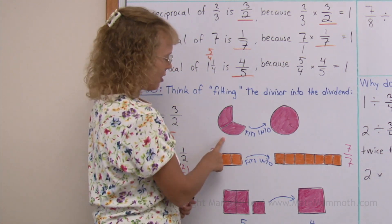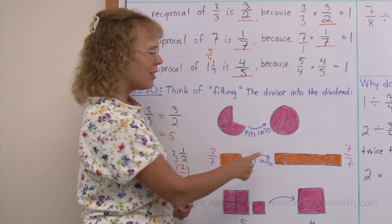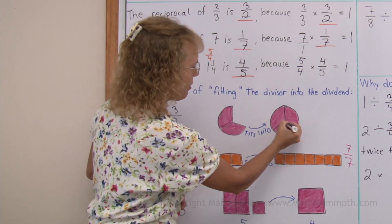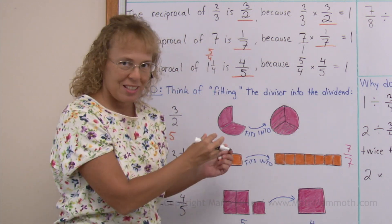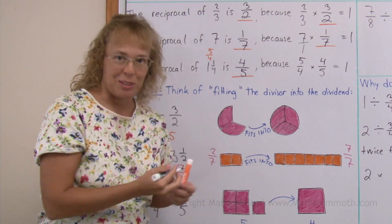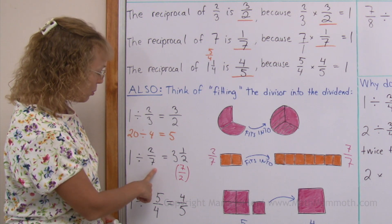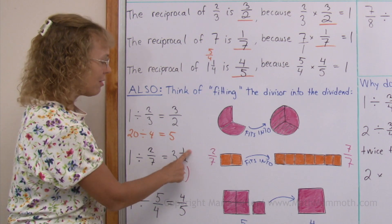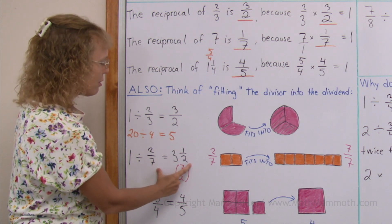Thinking of the fitting idea — 2 thirds fits into 1 exactly 1 and a half times. Here's 2 thirds, here's 1. I divide this into thirds: 2 thirds fits right here once, and then also half of it fits over here, so 1 and a half times. Now, 1 divided by 2 sevenths. The answer is 7 halves or 3 and a half, because if I multiply these I get 1 — these two are reciprocal numbers.